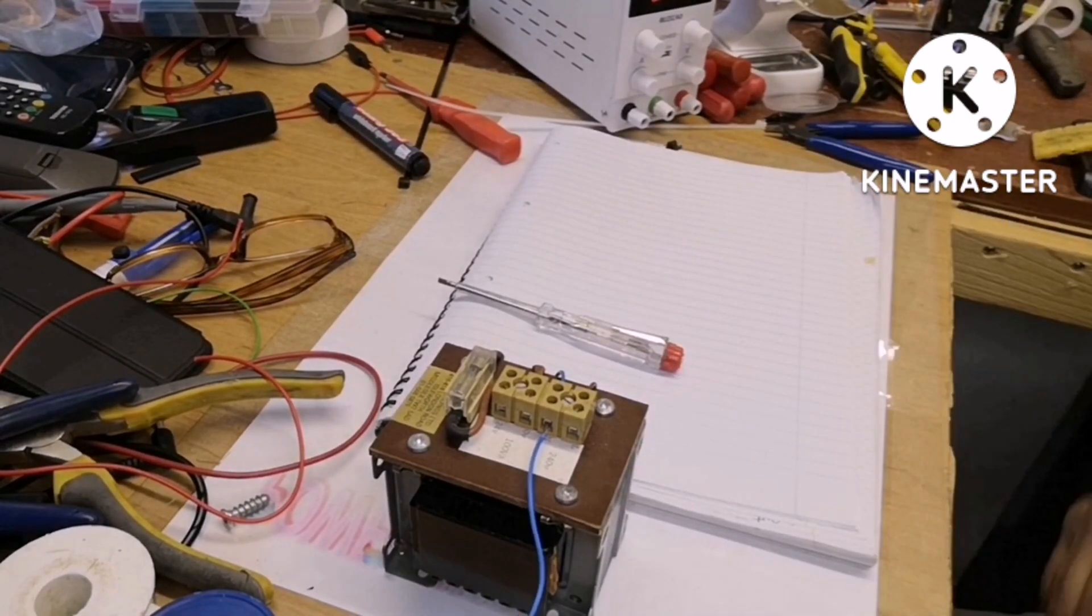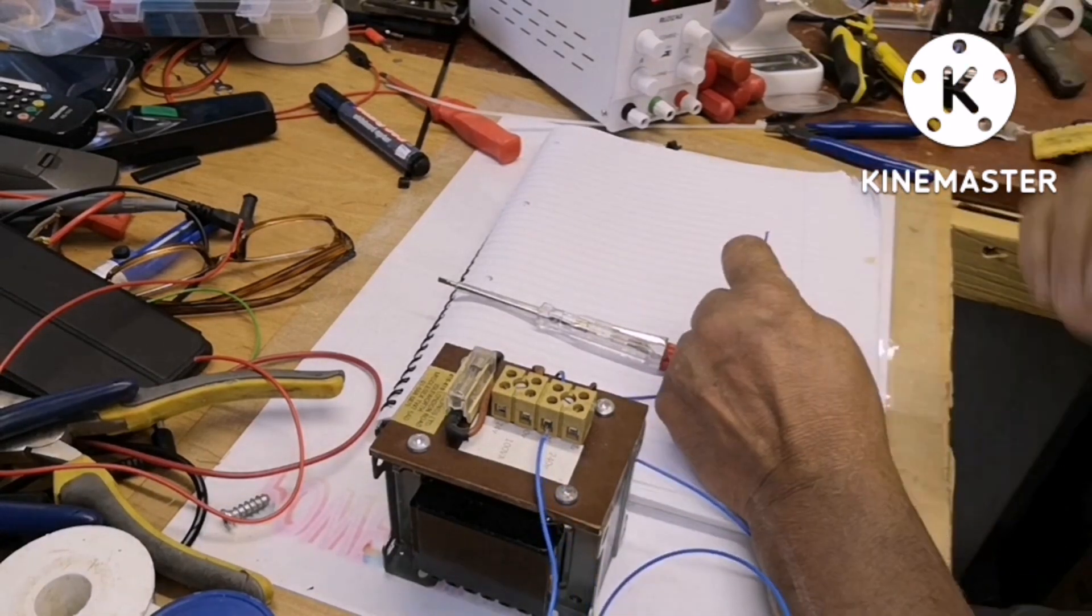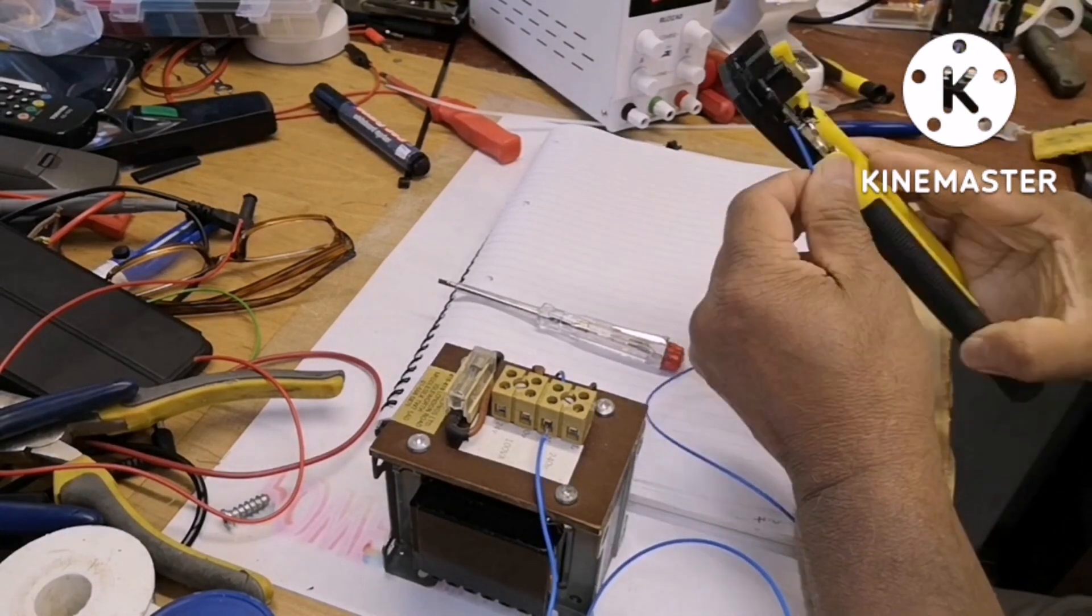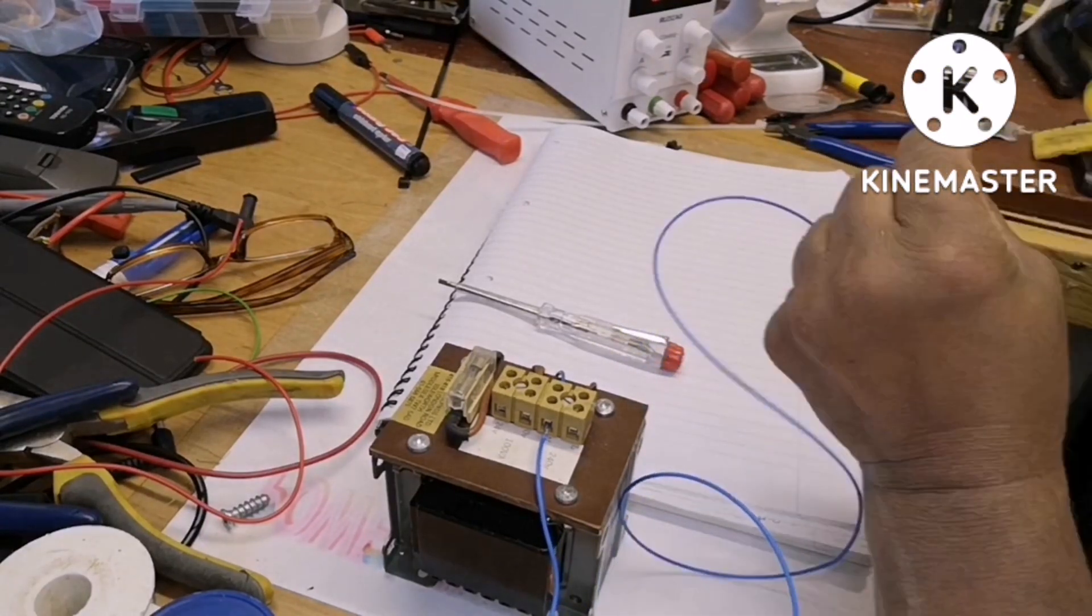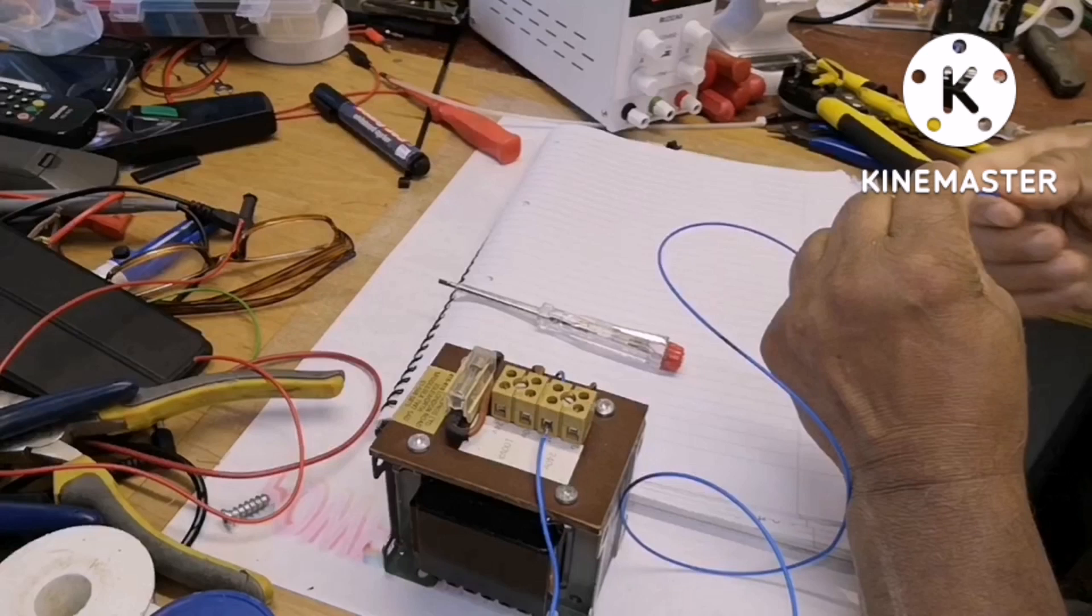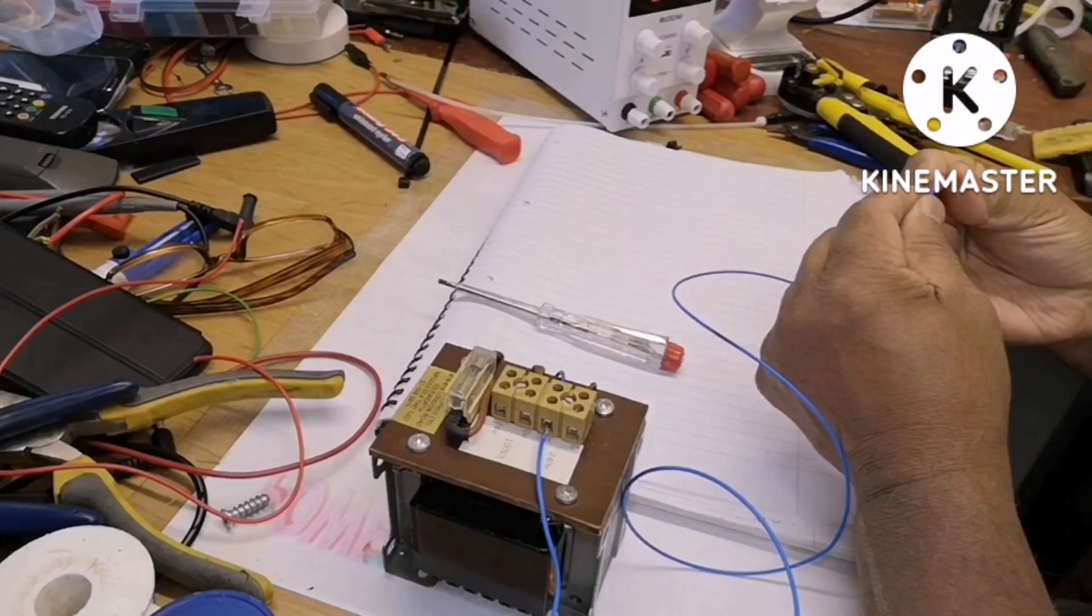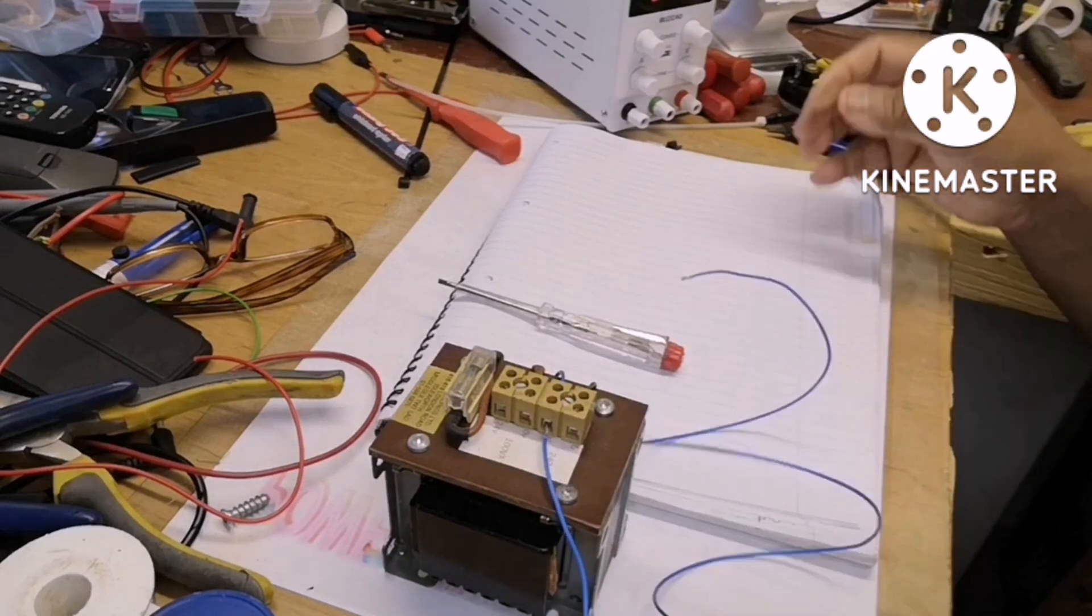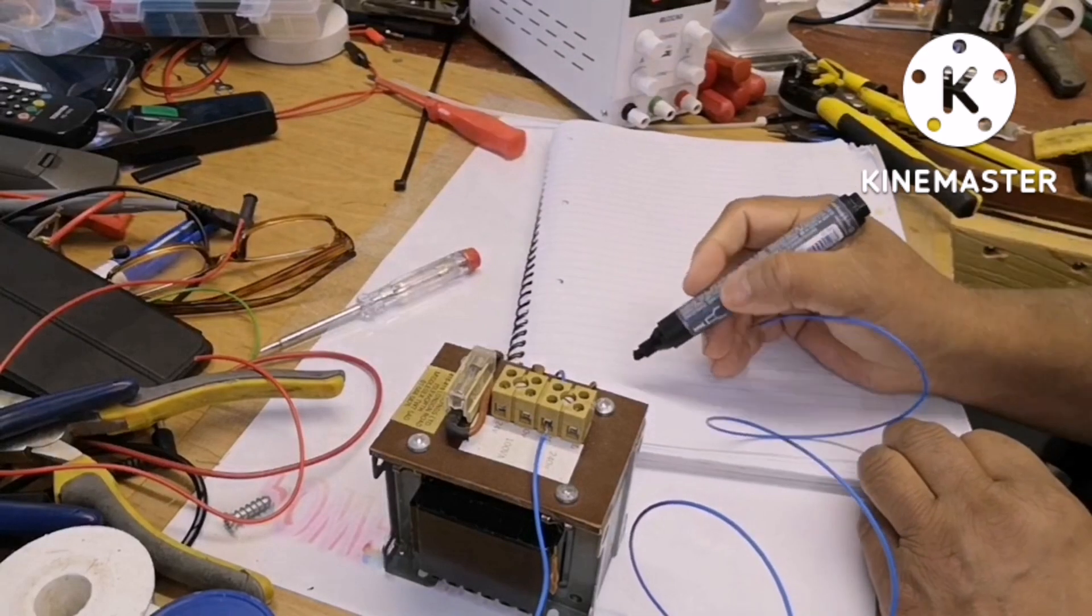Hello, welcome to my workshop. Let's talk about transformers today, how the transformer works and how it transforms 240 volts to 24 volts AC. This means stepping down from 240 volts to 24 volts AC.